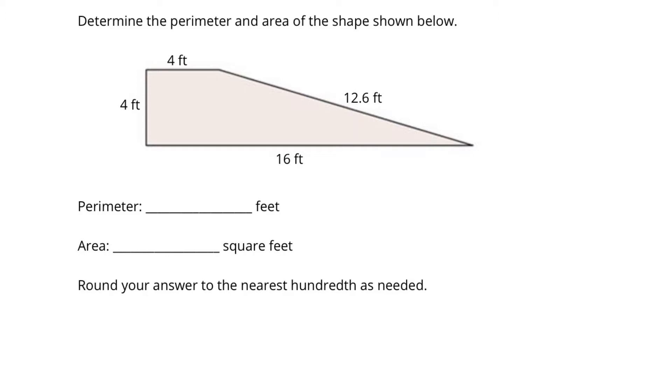And if we notice, this shape that we have isn't one of our common shapes, but it is, if we look closer, a square that's four feet by four feet, attached to a right triangle. And so we are looking for both the perimeter and the area of this composite shape, the square with the right triangle put together.